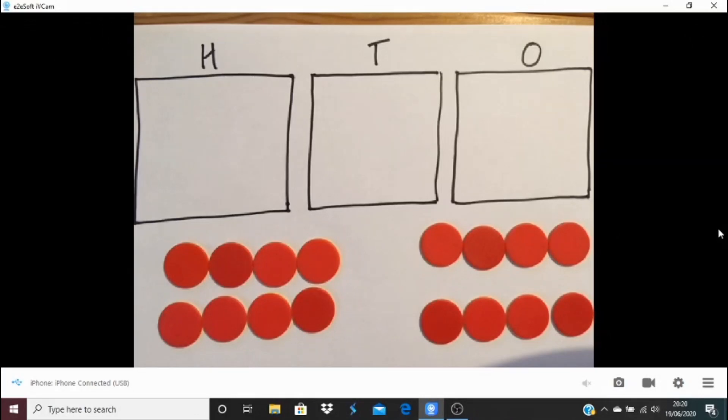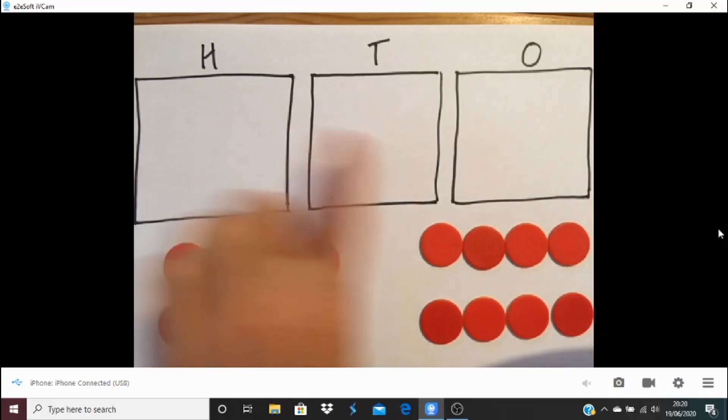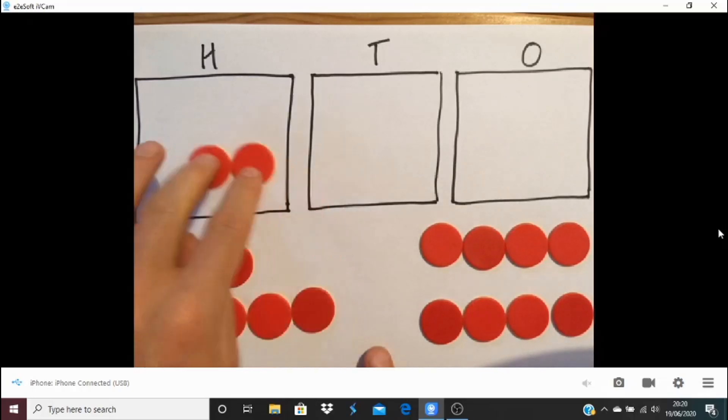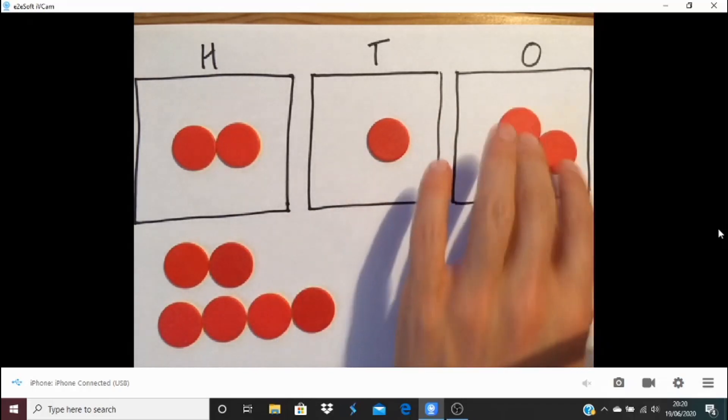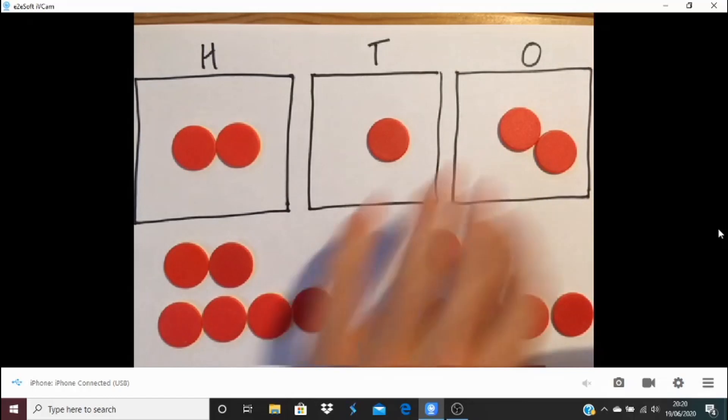So we're going to start off by looking at yesterday's extend task. Now, yesterday, if you remember, we were making numbers with hundreds and tens and ones using counters. And so, for example, like let's say this, that would be 201. There we would have 210 and so on. So that would be, for example, 213.